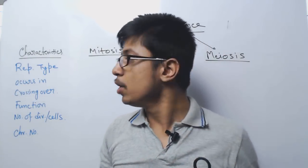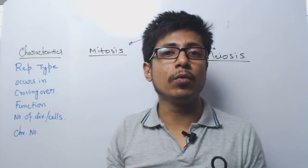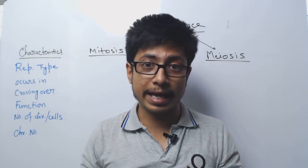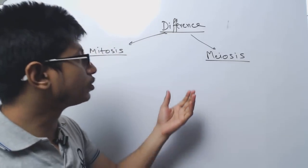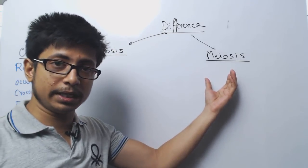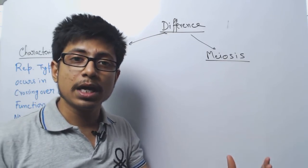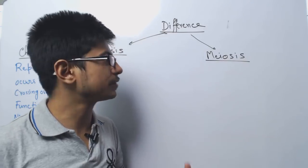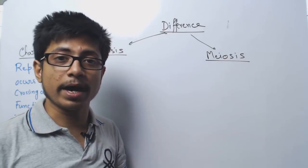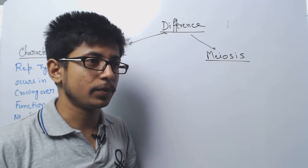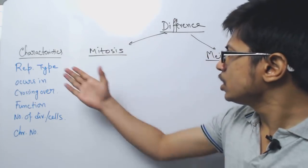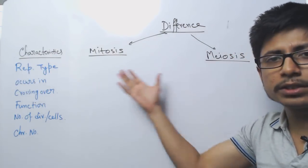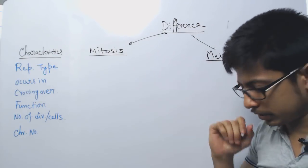We need both of them. We need mitosis if we have any wound or for normal cells to grow and divide to produce organs and structures. But we also need meiosis cell division because we want to produce our germ cells — sperm cells and egg cells — which are required to produce new offspring. This is the major distinction between mitosis and meiosis.